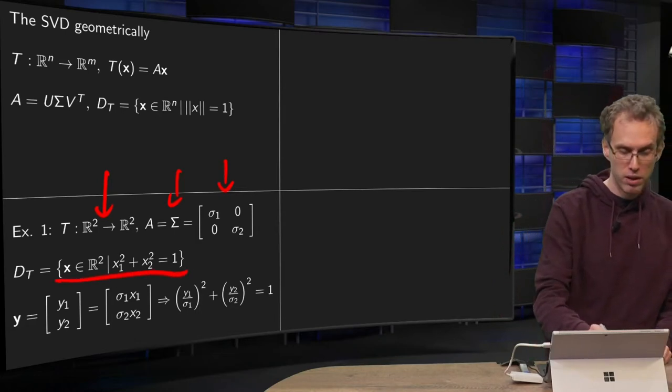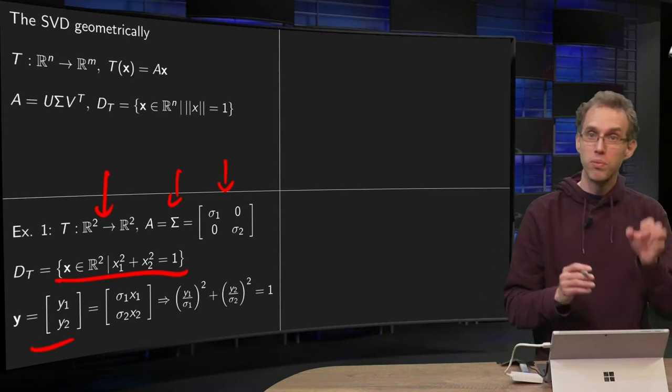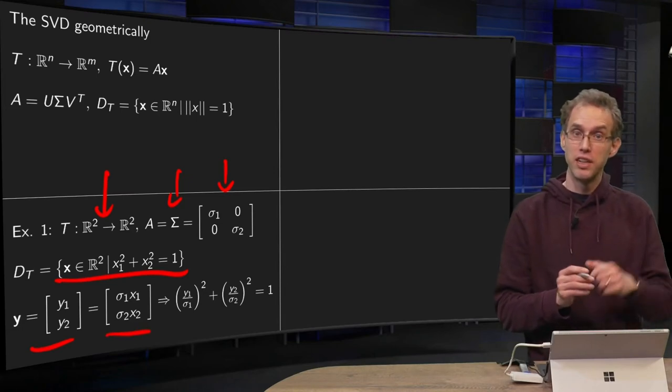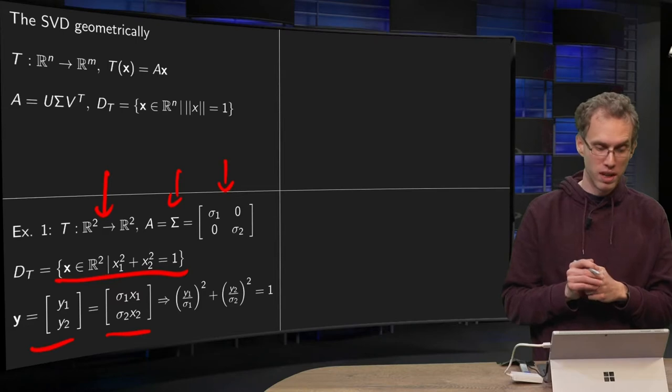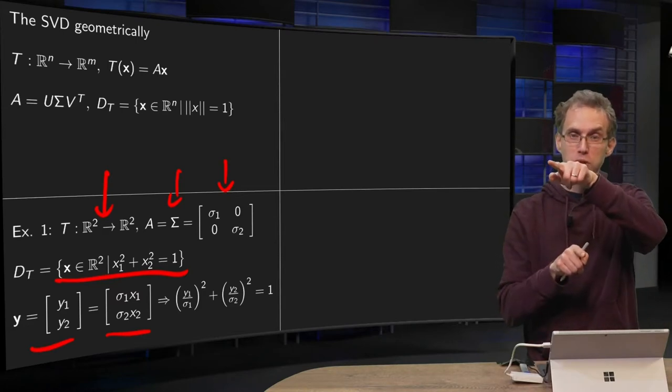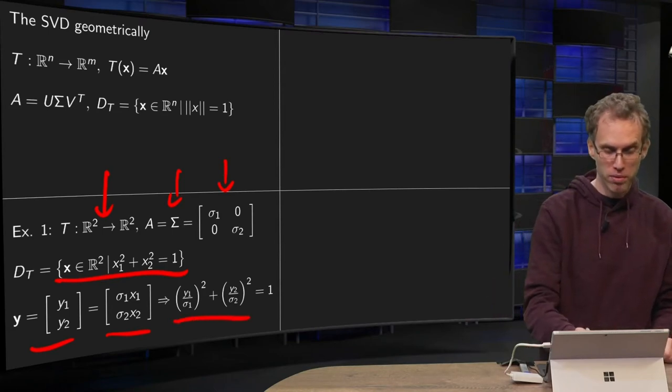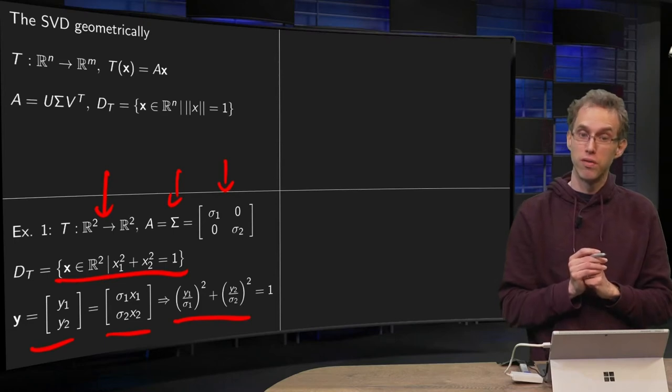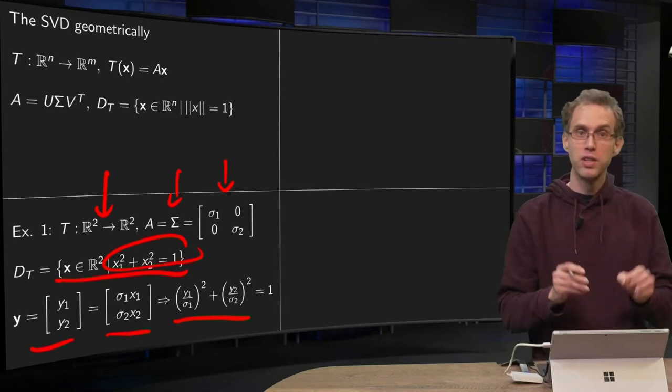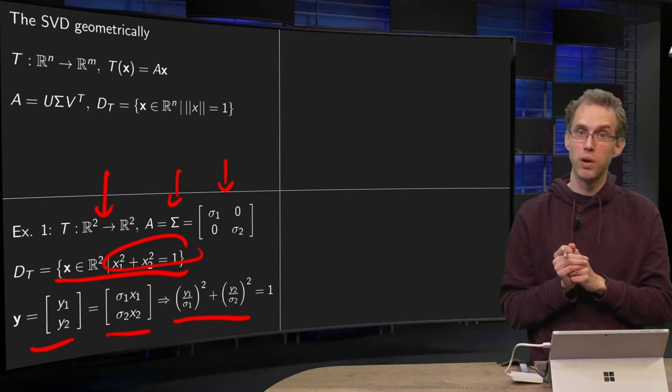Our domain will be the unit circle. Then we can compute y = (y_1, y_2), y equals A times x, you get sigma_1 times x_1 and sigma_2 times x_2. So what do we get? If we compute y_1 over sigma_1 and y_2 over sigma_2, you get x_1 and x_2, square and add, then we get (y_1/sigma_1)^2 + (y_2/sigma_2)^2 = x_1^2 + x_2^2, which equals 1.